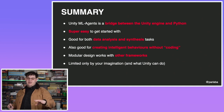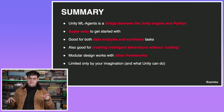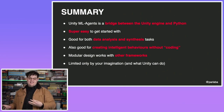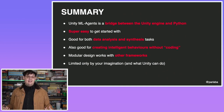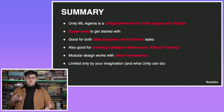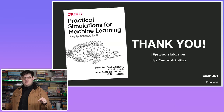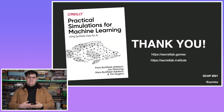That's the end of our talk. In summary: Unity ML Agents is a bridge between the Unity Engine and Python. It's really easy to get started with. It's good for both data analysis and synthesis tasks — you can create simulations in Unity, see how they behave, create synthesized fake data, and create intelligent behaviors without coding, whether that's an NPC for your game, a bot that can play a match-three game, or pretty much anything in between. It's modular — you can hook it up to other existing Python frameworks or Unity things, and it's really limited only by your imagination. Thank you for watching. Check out secretlab.institute for a blog post on how to get started with Unity ML Agents, and we're also writing a book on it coming out in the next six months.